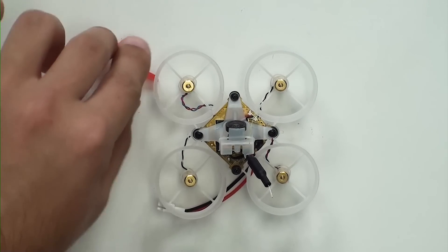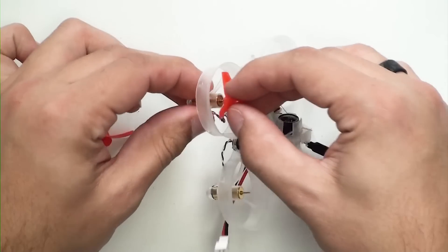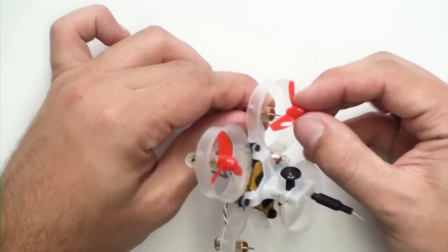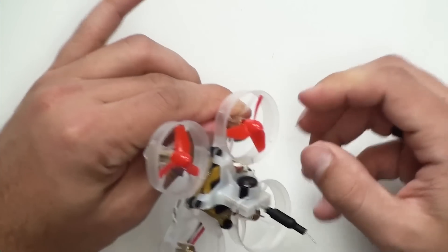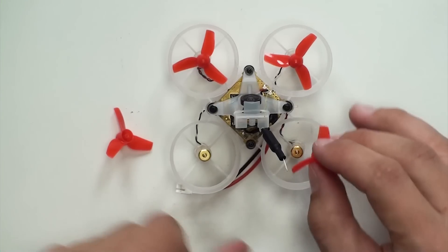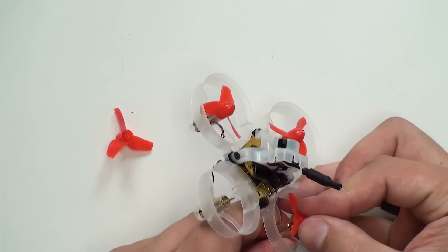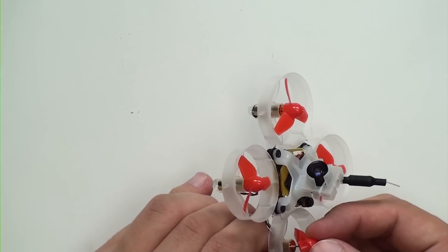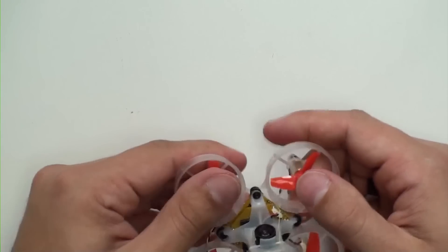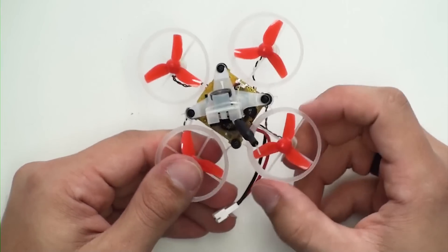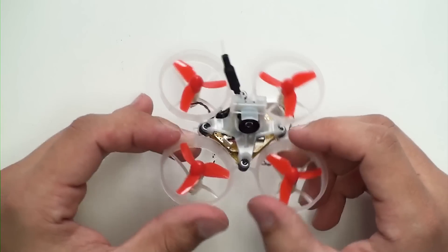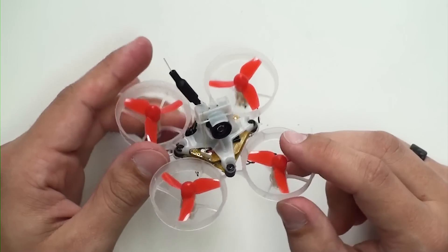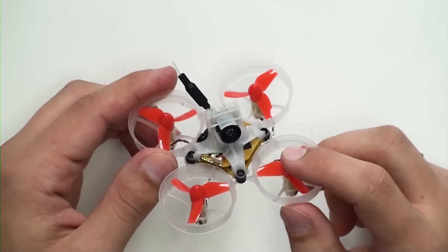Last step is adding our props. Go ahead and put these on. And that's it - you have an entirely built BeeBrain V2 using a Cockroach Frame, Gold Motors, and King Kong props. In the next video we'll show you how to bind this to the radio and set up the model.